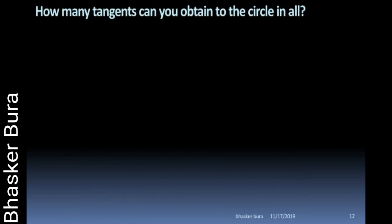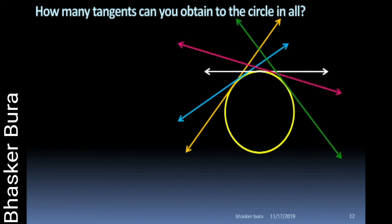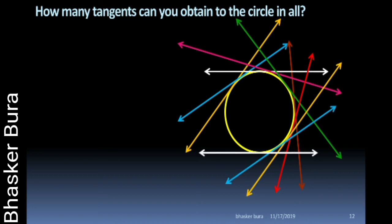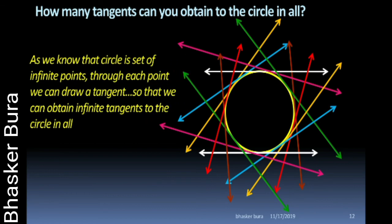How many tangents can you obtain to the circle in all? A circle is a set of infinite points which are equidistant from a fixed point, so through each point we can draw a tangent. Therefore, we can obtain infinite tangents to the circle in all.